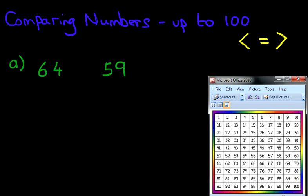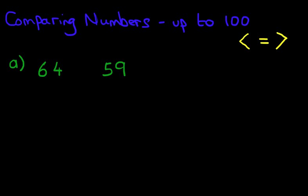Now for our question, I want you to find number 64 on the number grid. Can you find 64? It's over here. Now I want you to find number 59. 59 is over here. Which number comes first? When you start from 1, go all the way across, which number comes first? 64 or 59? 59. That's right. 59 comes first. So the symbol we have to put here is this one here. And the way this reads now is 64 is greater than 59.